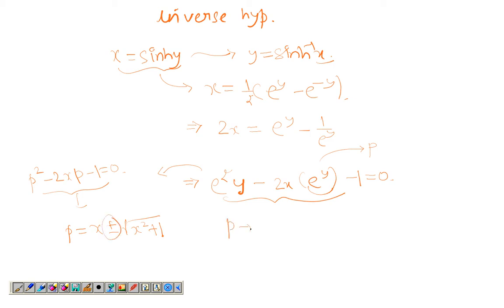Now, what is p? p is an exponential function. An exponential function, as we all know, is always positive. We can see the graph there. It's always positive. So p is always positive. So I'll just remove the negative and take the positive root. So p comes out to be x plus root x squared plus 1.